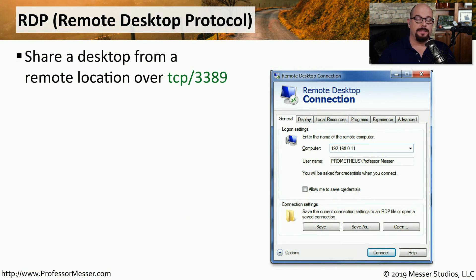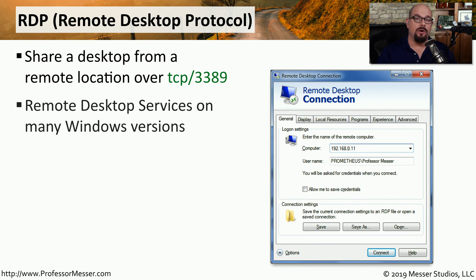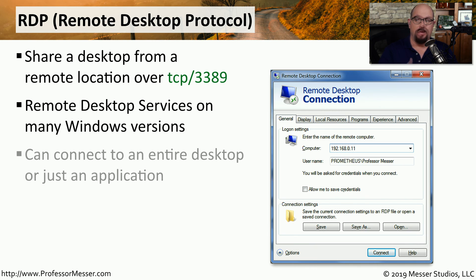One of the most common remote access technologies in Windows is the Windows RDP, or Remote Desktop Protocol. This allows you to view and interact with someone else's desktop while you're sitting at your own desk, using the network as the communications medium. There are remote desktop services available in many different versions of Windows, making this a very common way to share Windows desktops and other information. RDP allows you to connect and view an entire desktop, or you can simply connect to a single application on that desktop.